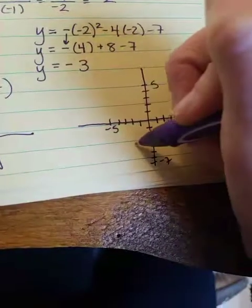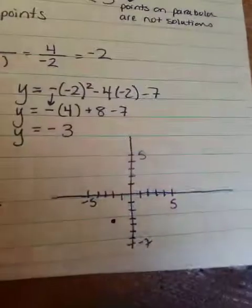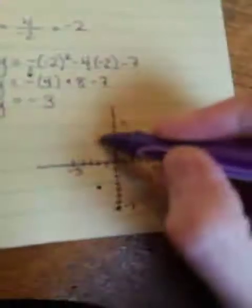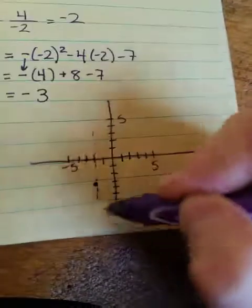And sorry about that. Okay, the y-intercept is at 0, negative 7. So if you have to put in the axis of symmetry, if that helps you graph it, go for it.